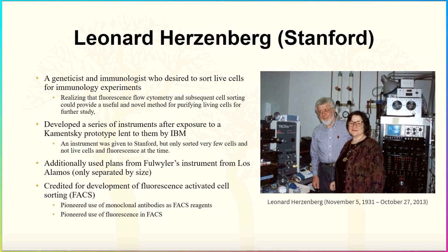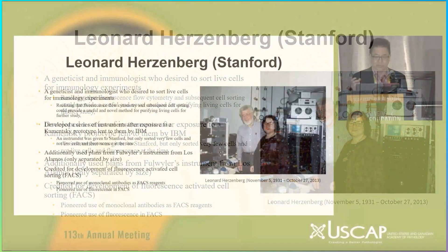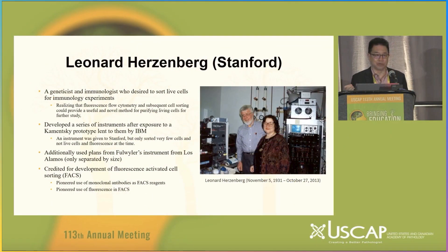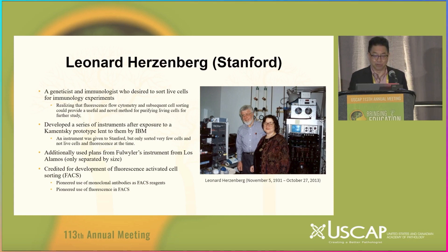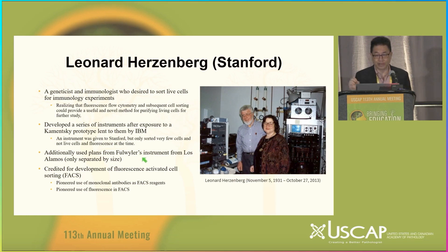The story continues with Leonard Herzenberg, who was both a geneticist and immunologist. He realized it was going to be very important to sort cells — not just a small number of them — and to recover them to do experiments with live cells. He looked at the Lou Kamensky prototype, which IBM had gifted to Stanford, and used some of its mechanisms. He was also influenced by Fulweiler's instrument from Los Alamos, but that only separated cells based on size using a Coulter counter.